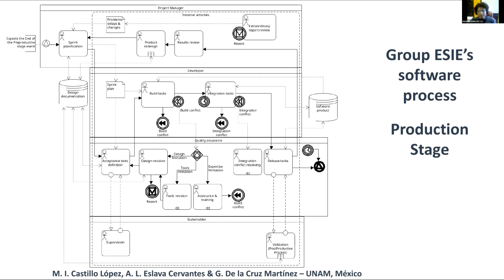Whether there are any exceptions or not, the product design is checked to verify if the current build complies with stakeholder needs and expectations so far. All these tasks occur in a few hours before the iteration, until the final product is built. At the end of each iteration, depending on agreements, stakeholders or their representatives can validate the build.